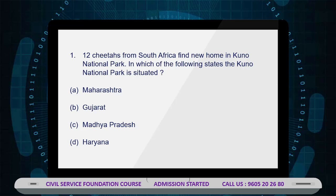The first question: 12 cheetahs from South Africa find a new home in Kuno National Park. In which of the following states is Kuno National Park situated? Option A: Maharashtra, Option B: Gujarat, Option C: Madhya Pradesh, Option D: Haryana. The correct answer is Option C — Madhya Pradesh.